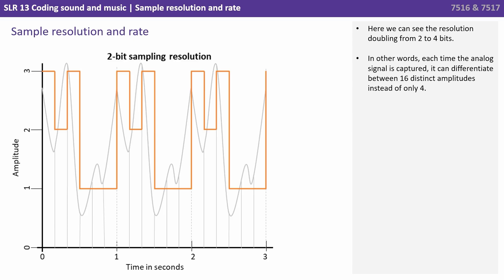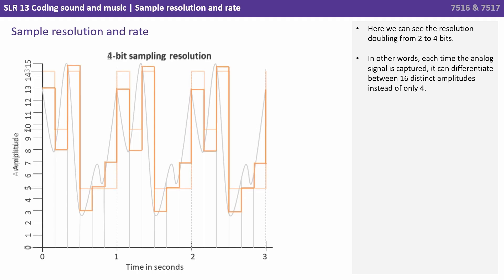Here we can see the resolution doubling from two to four bits. In other words, each time the analog signal is captured it can differentiate between 16 distinct amplitudes instead of only four.